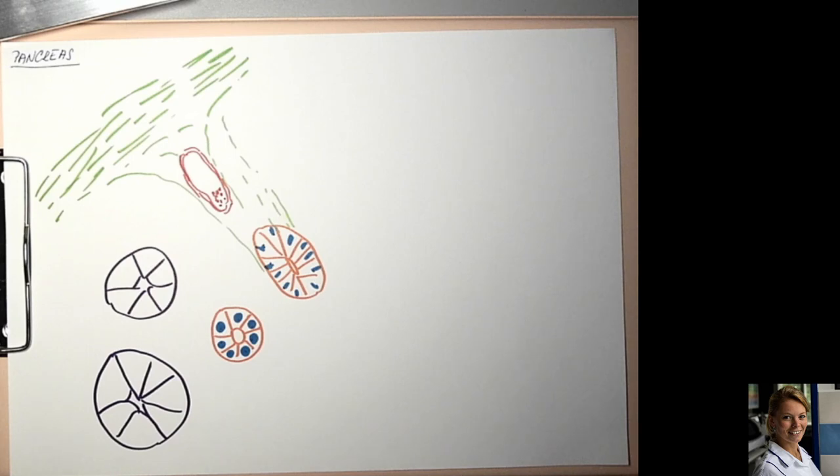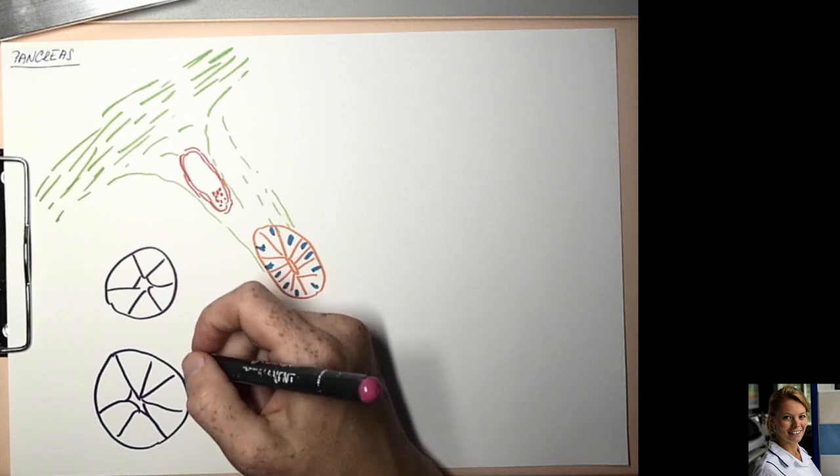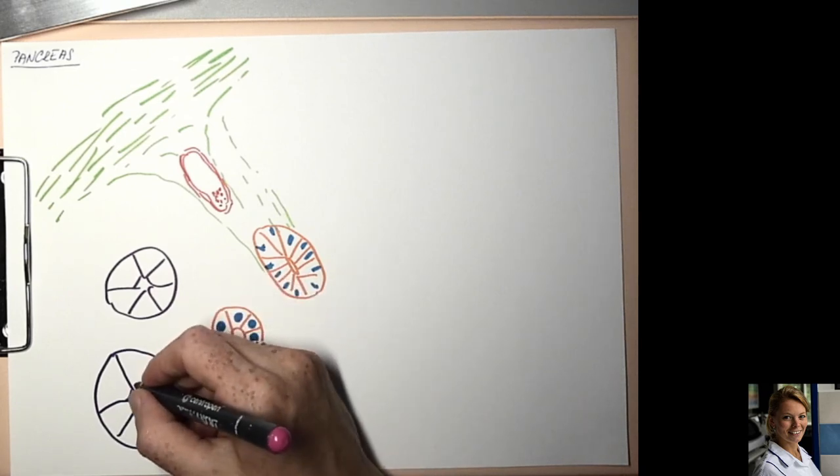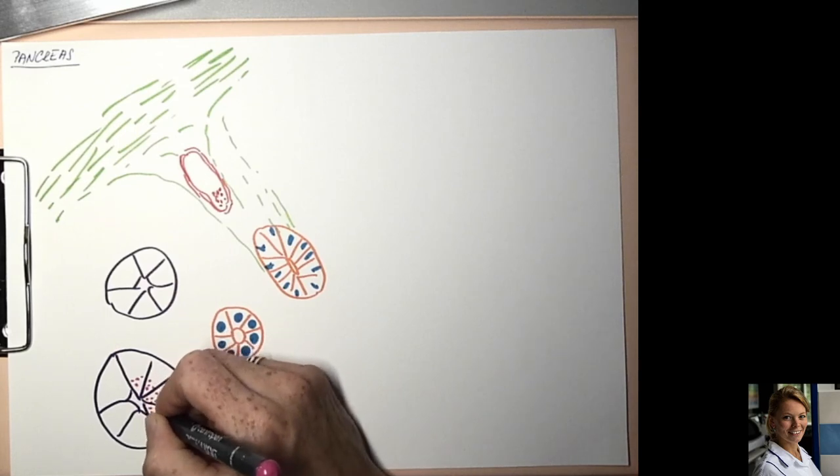These cells produce inactive digestive enzyme precursors, which are stored in the eosinophilic zymogenic granules in the apical part of these cells. This is zymogenic granules, eosinophilic.